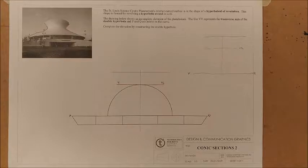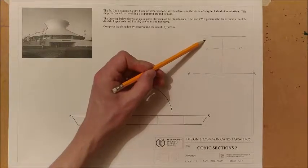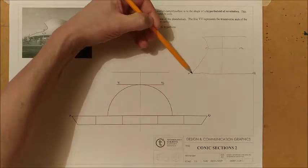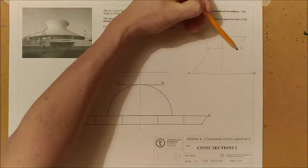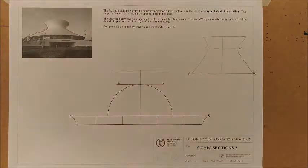The first thing we need to identify is essentially when you're completing your hyperbola, it's going to be sketched or drawn to produce a shape like so. You can see it's going to be the same here on both sides. So we need to use the correct method, which is going to be the rectangle method in this case, in order to construct that.